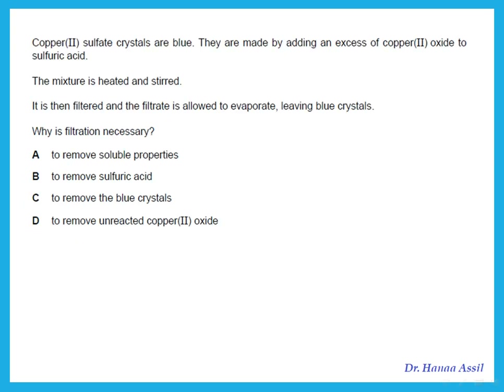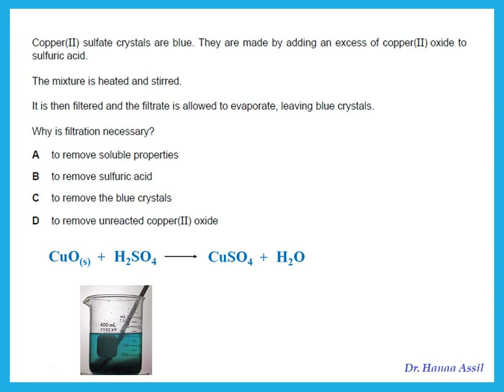Copper sulfate crystals are blue and are made by adding excess copper oxide to sulfuric acid. The mixture is heated and stirred, then filtered, and the filtrate is allowed to evaporate leaving blue crystals. Why do we filter? We add excess copper oxide to make sure all the acid has reacted. Once excess solid remains in the beaker, we filter to remove the unreacted, excess copper oxide from the bottom of the beaker.